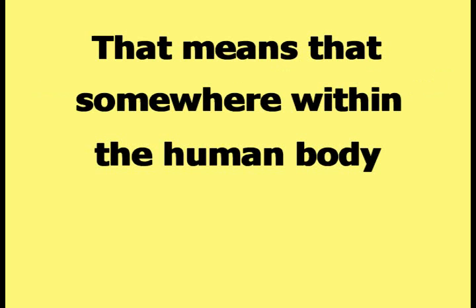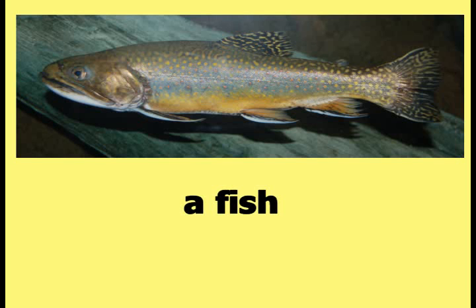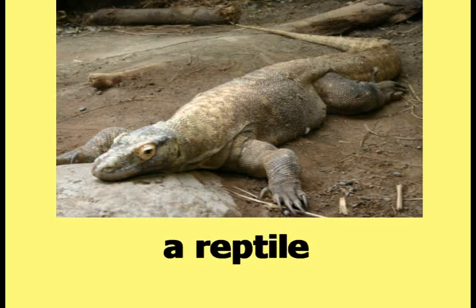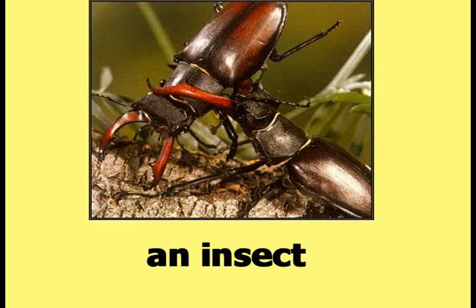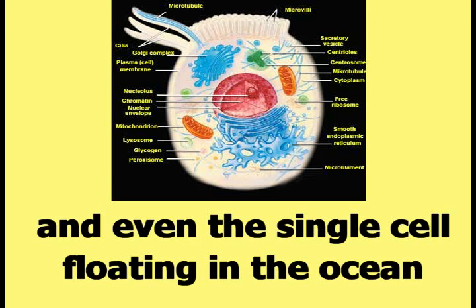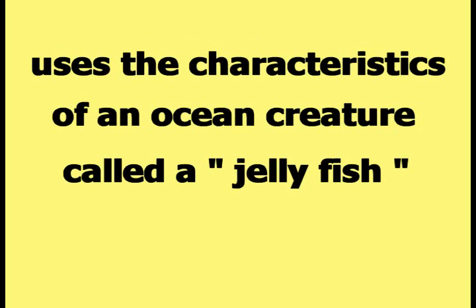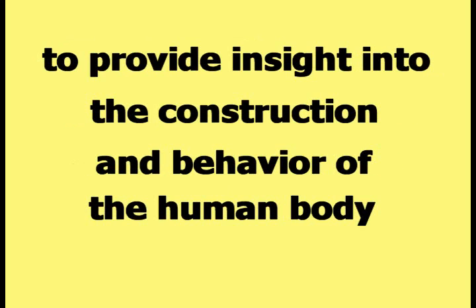That means that somewhere within the human body can be found one or more characteristics of a fish, an amphibian, a reptile, an insect, a bird, a mammal, and even the single cell floating in the ocean. The jellyfish view of the human body uses the characteristics of an ocean creature called a jellyfish to provide insight into the construction and behavior of the human body.